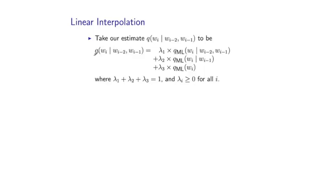In linear interpolation, we're going to come up with an estimate that takes into account the maximum likelihood estimates at the trigram, bigram, and unigram levels. This new estimate is actually going to be a weighted average of these three maximum likelihood estimates. We have three additional parameters, lambda 1, lambda 2, and lambda 3, and these dictate the relative weights of the three maximum likelihood estimates. We have some constraints on these lambda values. They have to sum to 1, and they have to be greater than or equal to 0.